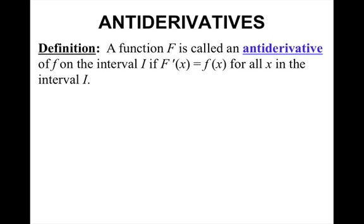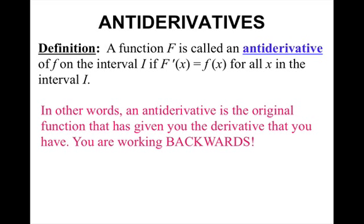So antiderivatives: a function F is called an antiderivative of f on the interval I if big F prime is equal to little f for all x in the interval I. In other words, an antiderivative is the original function that has given you the derivative that you have. You are working backwards.